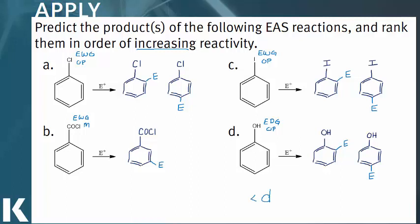Now we need to consider our electron withdrawing groups. In terms of deactivation, acyl halides are much better deactivators than chlorine and iodine. So it would go as our least reactive. It's a better deactivator, so we have less reactivity.